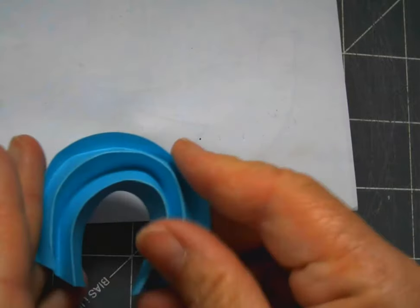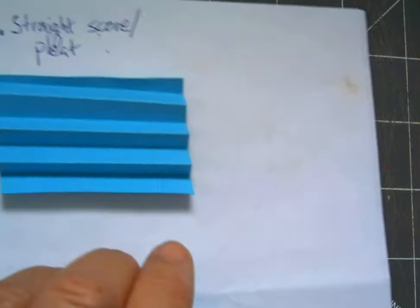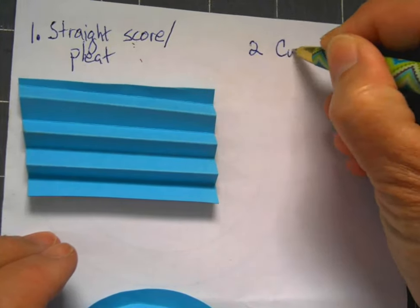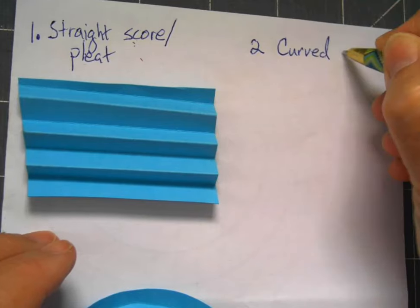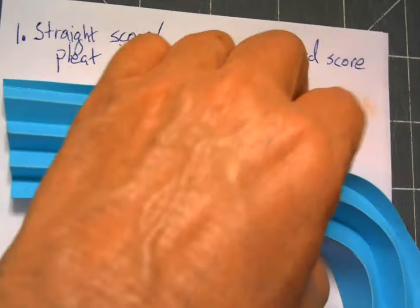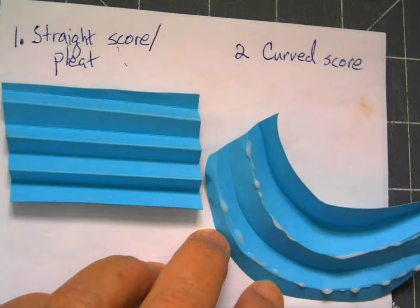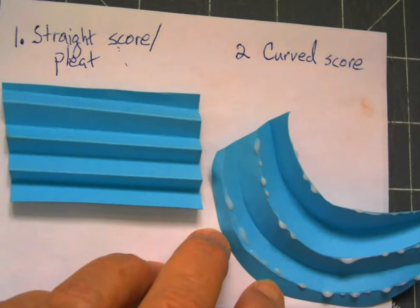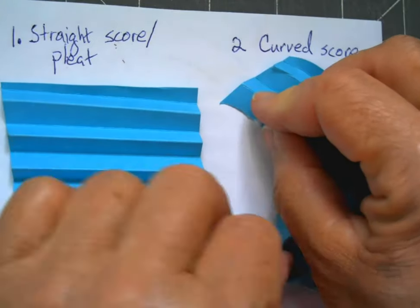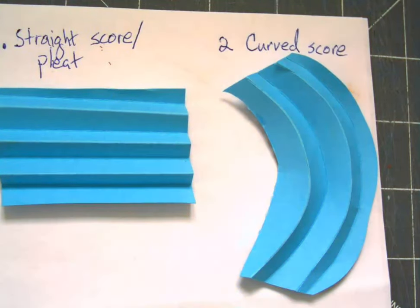Since I'm going to be collecting these practice techniques, go ahead and on a paper write number two: curve score. Then use tiny dots of glue just along the edges where the edges will touch the paper and glue that down.